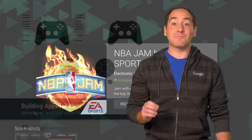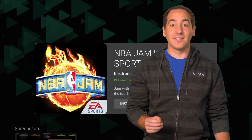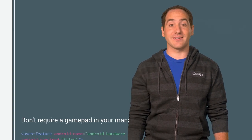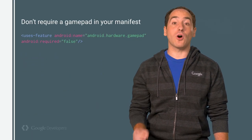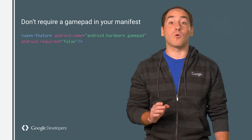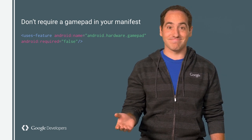Now if your game requires a gamepad, you should let players know in the Play Store. To do so, add the Gamepad feature to your manifest, but be sure to always set it to required false. This is a gotcha — it must be false because gamepads are accessories and they might not be connected at the time of purchase. Instead of requiring this feature, check whether a gamepad is connected when your game starts up.